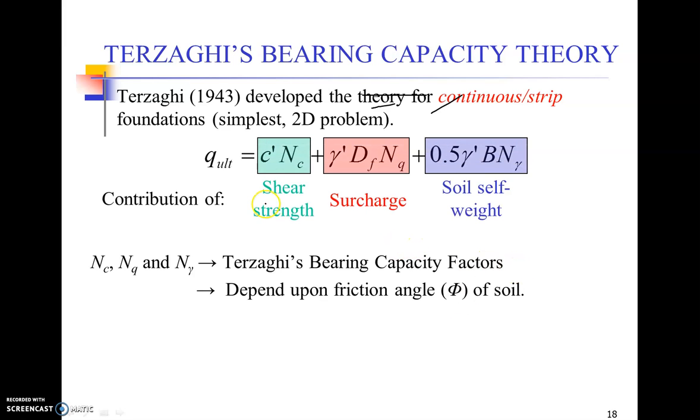The first term that you see on the right-hand side of this equation is the shear strength term of the soil. So this entire term is called the shear strength term because it involves the undrained shear strength that comes from the unconfined compression test or any undrained shear test directly, and c is a factor that depends upon the value of phi.